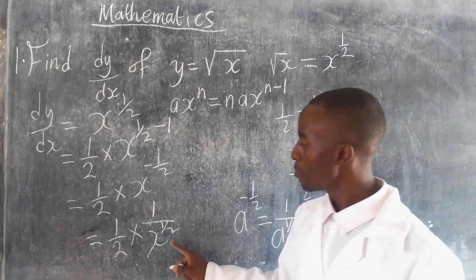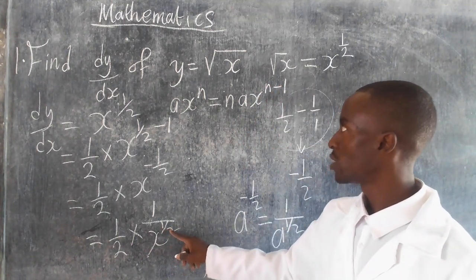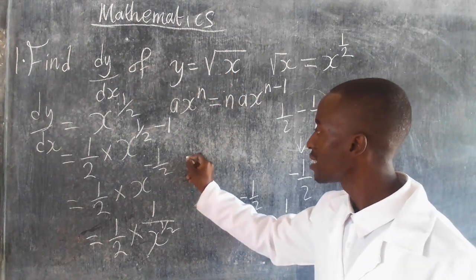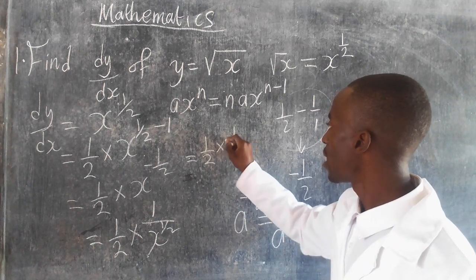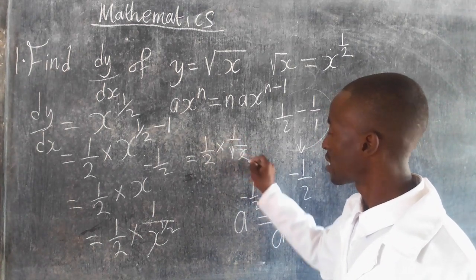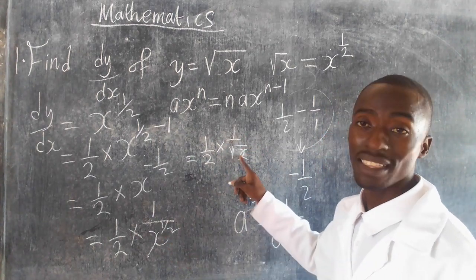Now again, remember x to the power 1 over 2 is the same as the root of x. So the final answer now will be 1 over 2 multiplied by 1 over the root of x, because this and this are the same.